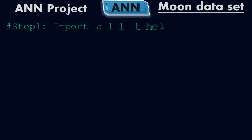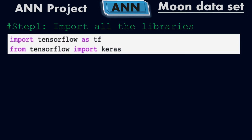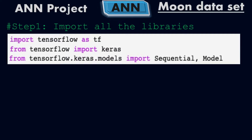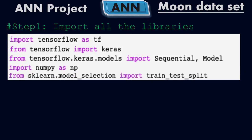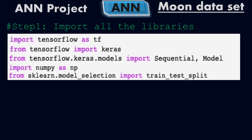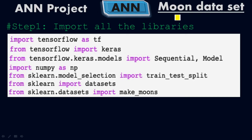Step one is to import all the respective libraries. For example: import tensorflow as tf, from tensorflow import keras, from tensorflow.keras.models import Sequential and Model, import numpy as np, and from sklearn.model_selection import train_test_split.